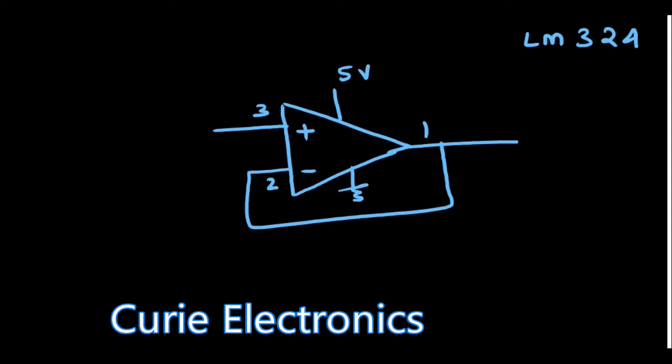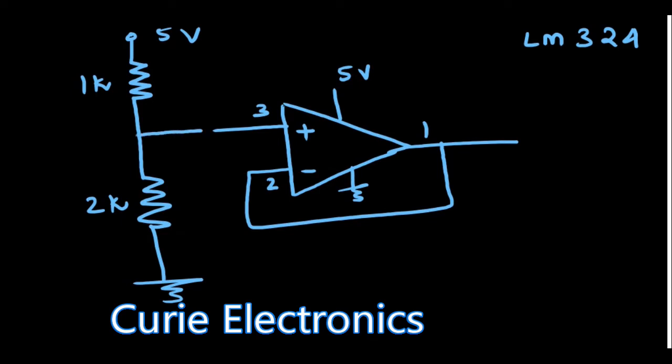Then, what we have to do? Now, whatever the circuit we had, that is the voltage divider. The same voltage divider, I will use. This is 1K resistor, it is 2K resistor. If we do not have a 2K resistor, we can add two 1K resistors in series. That is what I will use to make the circuit.